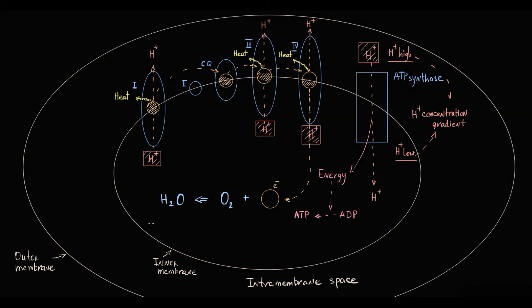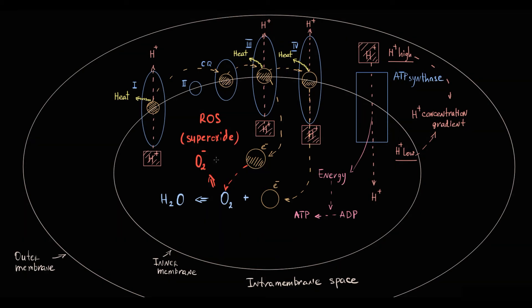However, the electron transport chain is not perfect, and some electrons can leak out of it. In this situation, they reduce oxygen in another fashion — they reduce oxygen with formation of superoxide, which is a reactive oxygen species and a very dangerous molecule. So some electrons can find the way out, and as a result they become very dangerous substances for mitochondria and the cell.